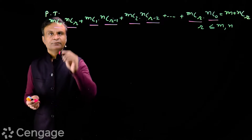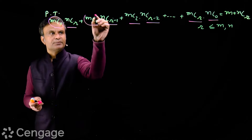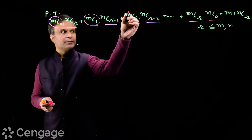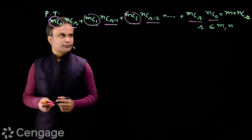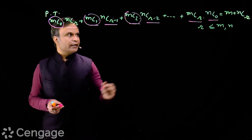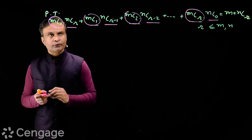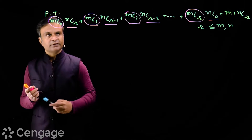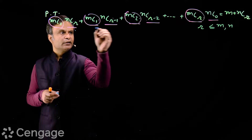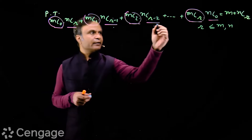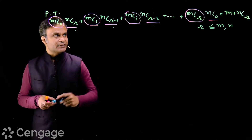What is happening here — in this group, mC0, mC1, mC2, the value is increasing. And in this group of factors, nCr, nCr-1, nCr-2, nC0, the value is decreasing.